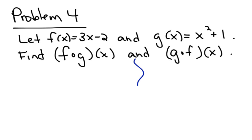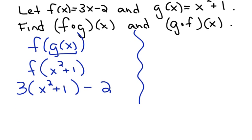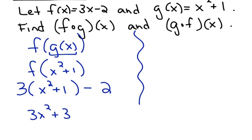So let's start with f of g of x. That's saying this. It says take the output g of x, which is x squared plus 1, and plug it into f. So f is 3x minus 2. So I'm going to take out the x and replace it with x squared plus 1. Then I'm going to distribute and simplify. And I find out that f of g of x is 3x squared plus 1.